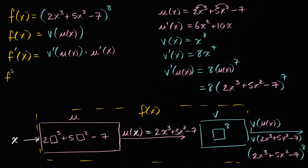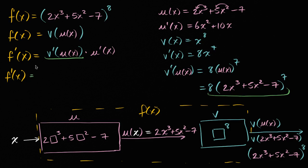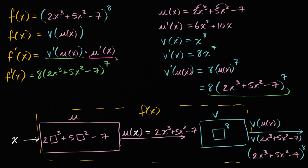So there you have it. f prime of x is equal to v prime of u of x, which is eight times two x to the third plus five x squared minus seven, all of that to the seventh power, times u prime of x — which we figured out is six x squared plus ten x.